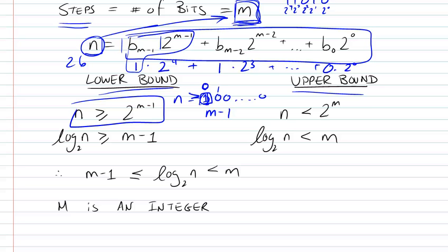To continue from our previous video, we found a lower bound to n. We said that n cannot be less than whatever its first bit, its most significant bit, represents as a decimal value.